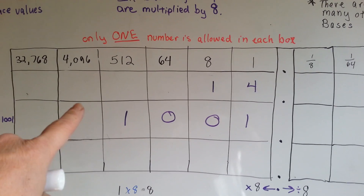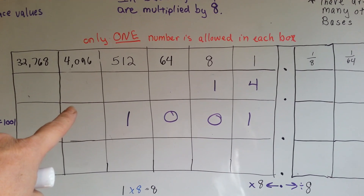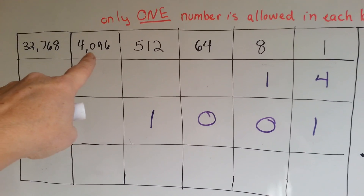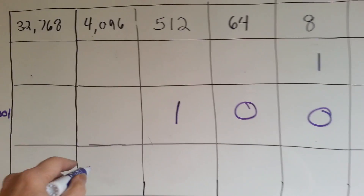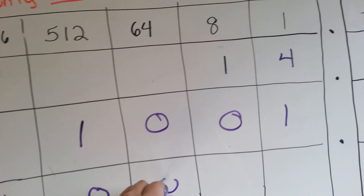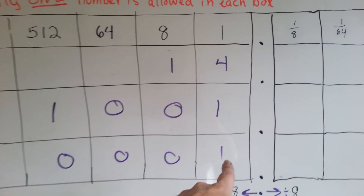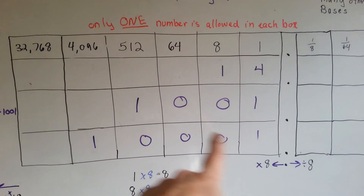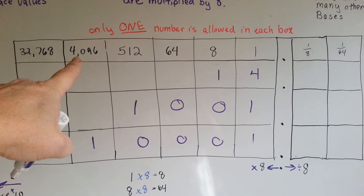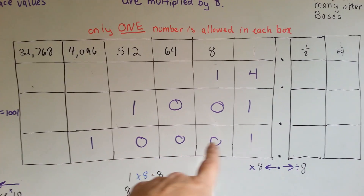If you had four hundred and ninety-seven, you'd get one of these, zero of these, and a one. To get four hundred and ninety-seven. See how that worked?